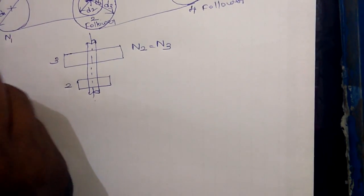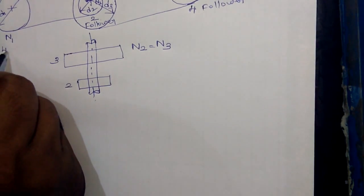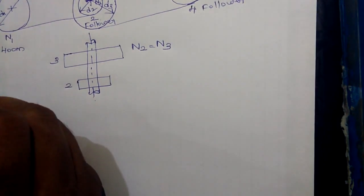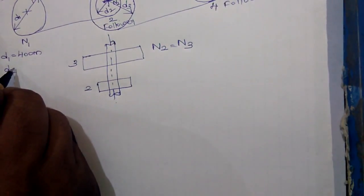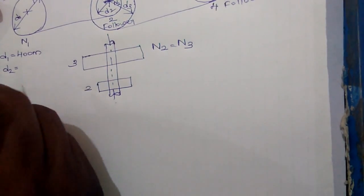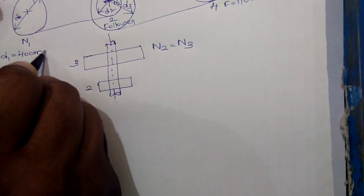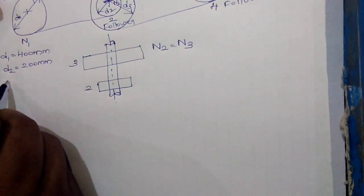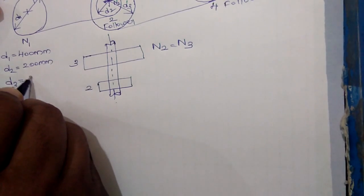Now let us give the value d1 as 400 mm diameter of driver 1, d2 diameter of follower as 200 mm, d3 as 300 mm.